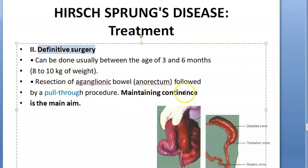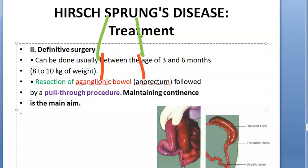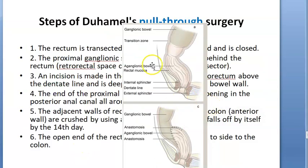The definitive surgery involves resecting the aganglionic segment and pulling the normal ganglionic bowel down and attaching it to the anus — this is the pull-through procedure. The good, functioning part of the colon is pulled down to replace the non-functioning aganglionic segment.